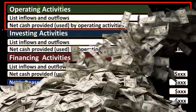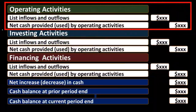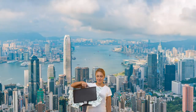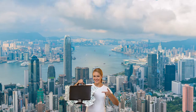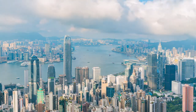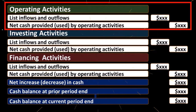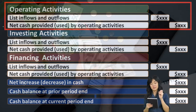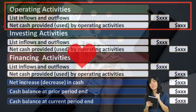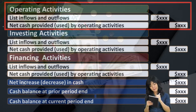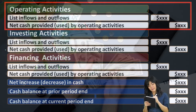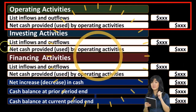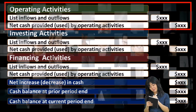The operating activities section is usually the longest part of the statement. When we tell the story of what's happening within a company — whether through income statement activity or cash flow — most of the transactions and most of the detail are going to be in the operating activities section. There are other sections — investing and financing — where we could have cash flows that are not part of the normal operating activities.